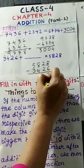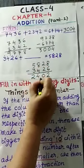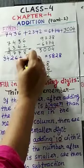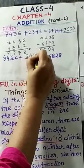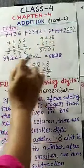8 minus 6, 2. Then 0. Then 4. Then 2. 2,402. We will write 2,402 here. Now, this is the process. We will go through the process nicely.